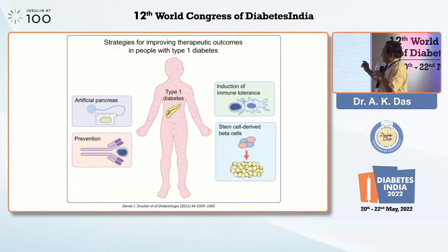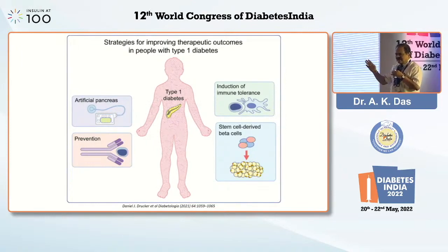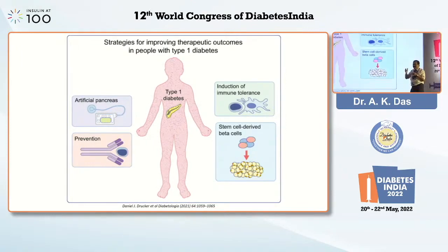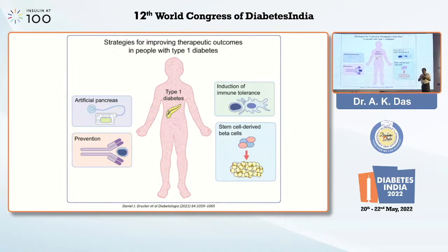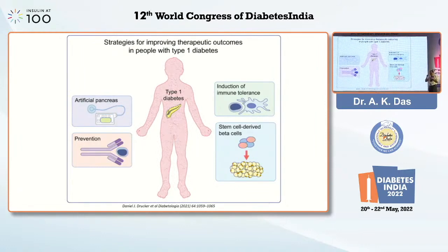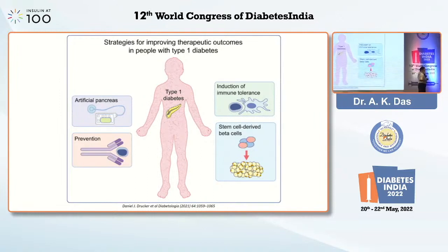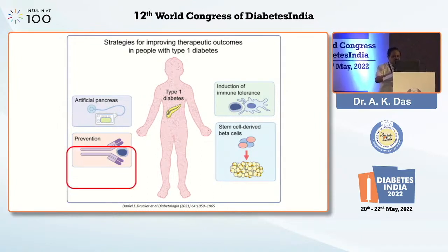In type 1 diabetes advances, what are the strategies to improve therapeutic outcomes? One is the artificial pancreas — the UVA with Dexcom has been approved. The other advance is prevention by MAPs — immune tolerance approaches. Genetic change is not possible; we cannot choose our parents. But immune induction is possible for type 1 diabetes, and stem cell-derived beta cells are also holding promise for type 1 diabetes prevention.